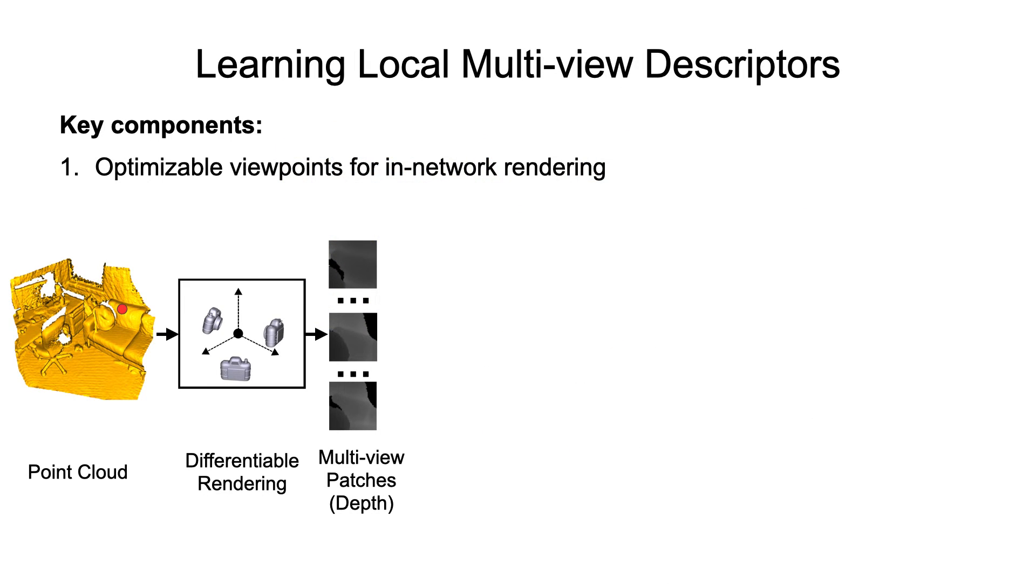First, to render the local geometry as multi-view images, we need to define a set of viewpoints. Instead of setting the viewpoints with handcrafted rules, we propose to treat the viewpoints as optimizable parameters. The viewpoints are used in a differentiable renderer, which allows online multi-view rendering within neural networks.